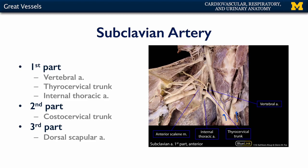Those three parts are named due to their relative position to the anterior scalene muscle. The anterior scalene originates on the transverse processes of cervical vertebrae and inserts on the scalene tubercle of the first rib. All branches of the subclavian that are medial to the anterior scalene are of the first part, and any branches lateral to the anterior scalene, all the way out to the margin of rib one, constitute the third part.